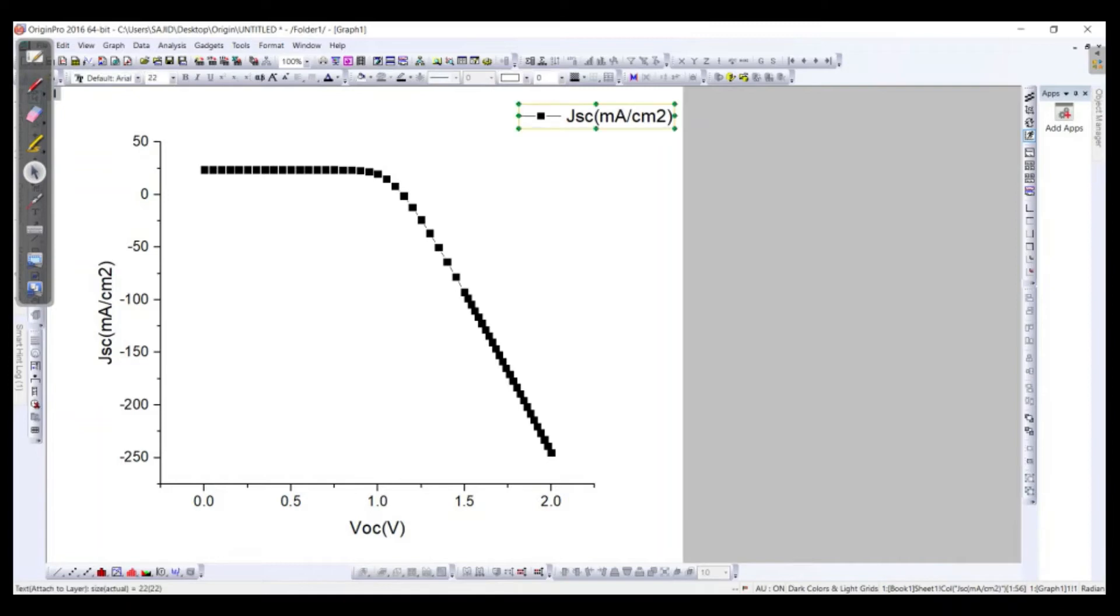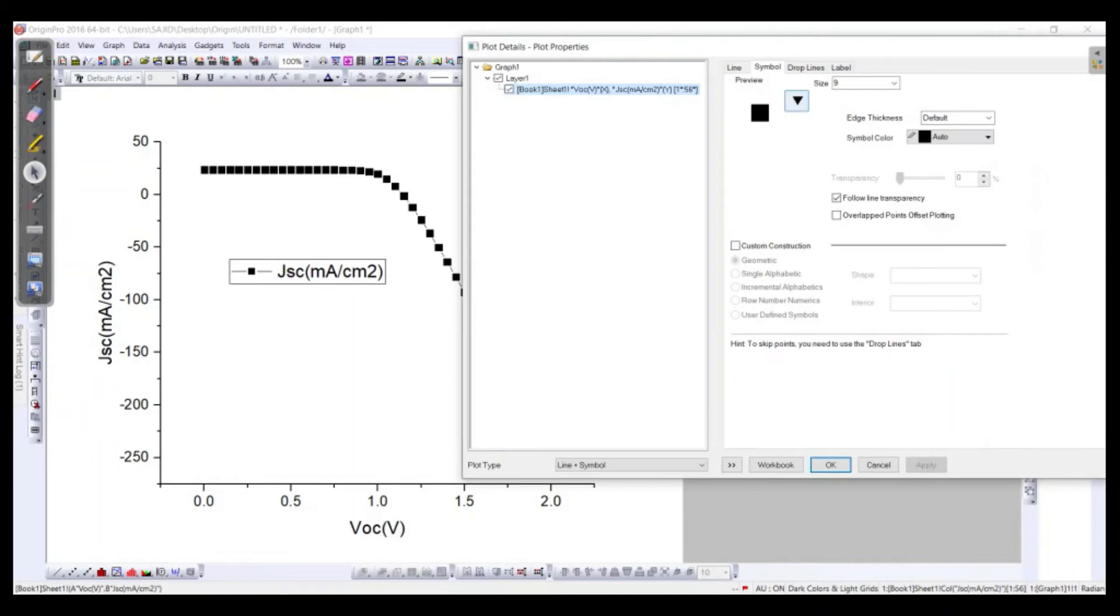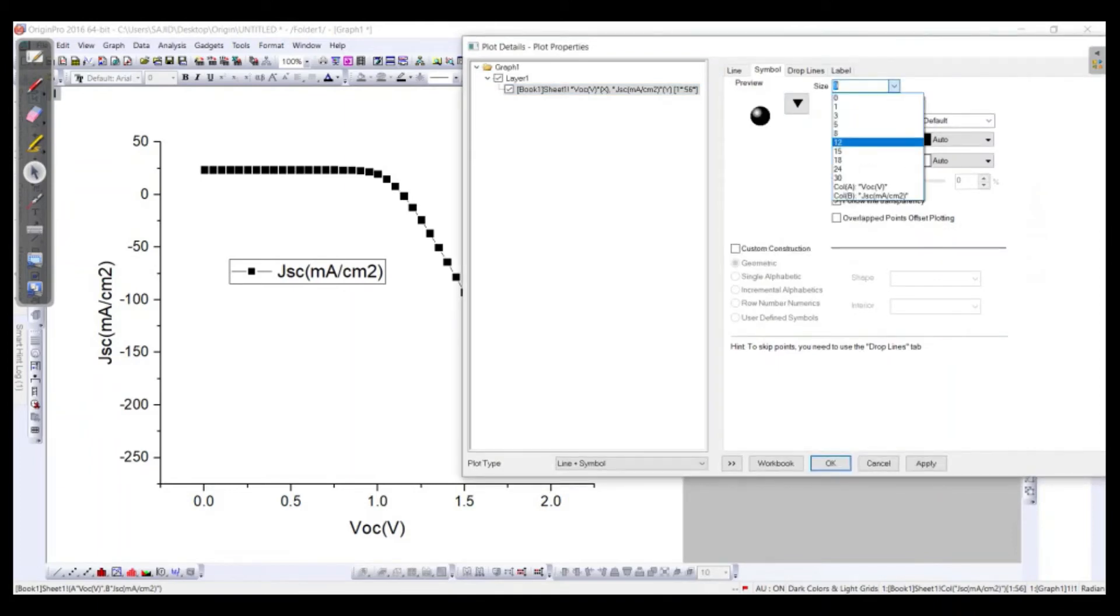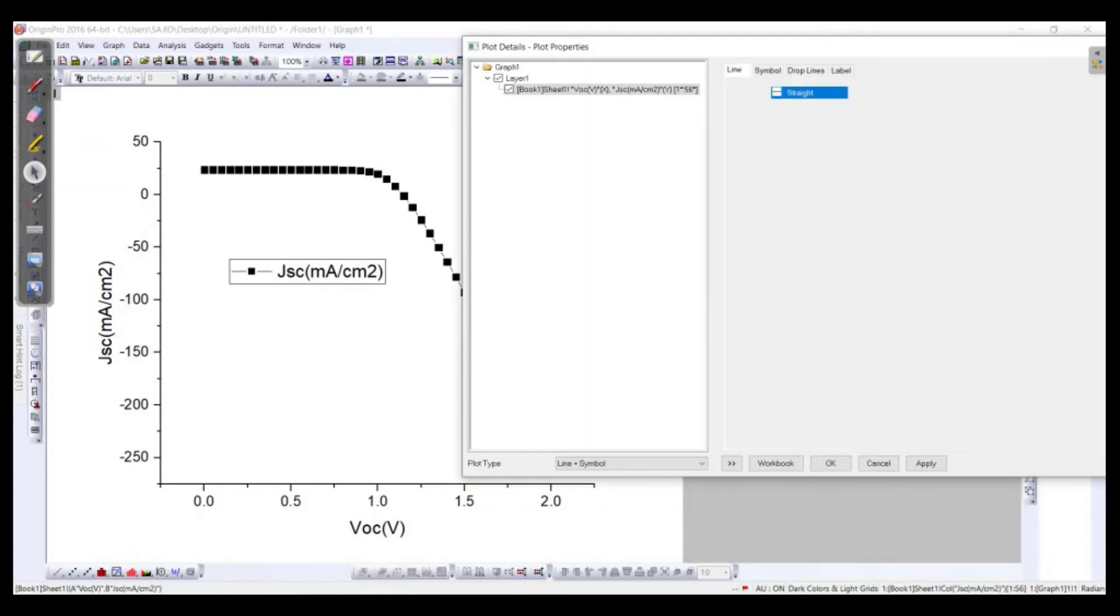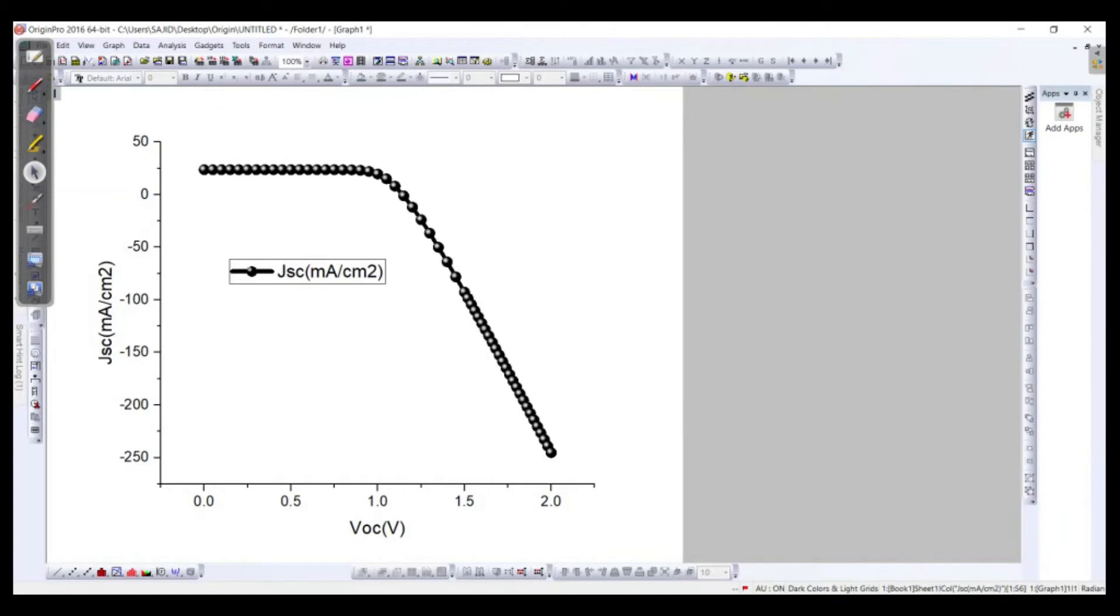So we can say that for example if I want to make it more visual, for example in black color. So this is the symbol and this is the line which we can make bold, for example 5 for the sake of the manuscript, and let's say apply it. And for example if you want to change the legend, so we can change it that is the J-V curve. We can play around this one, let's say make it bold.